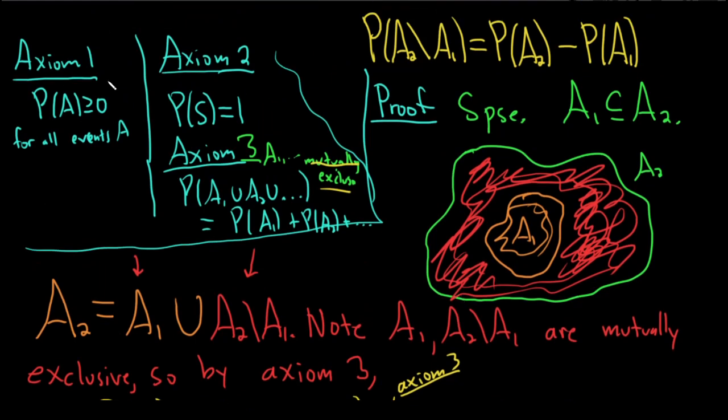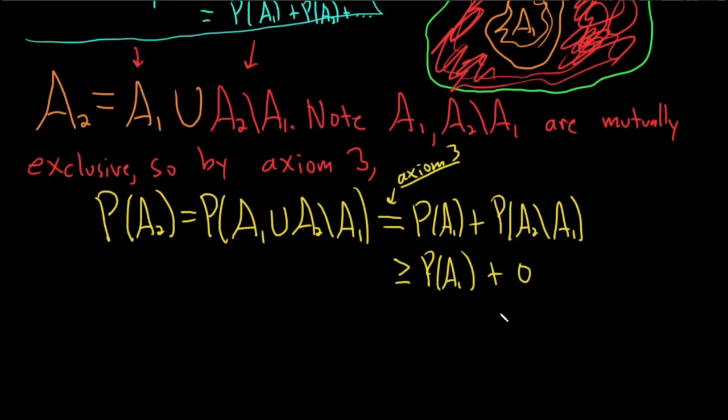This is greater than or equal to P of A1 plus 0. We're just replacing this with a 0, and this is by axiom 1, right? The very first axiom. It's really important to write down when you use the axioms. That's like the most important part of this. So I wrote it here, but notice I wrote it again just to really emphasize that's the step, and then this is the step where we use axiom 1.